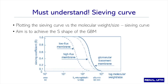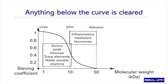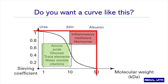You must understand the sieving curve. When you plot the sieving coefficient versus the molecular weight size, you get a sieving curve. The aim is to achieve the S-shape of the glomerular basement membrane. With the high flux membrane, you can see the curve is shifted to the right and closely resembles the glomerular basement membrane. Anything below is the zone of permeability.